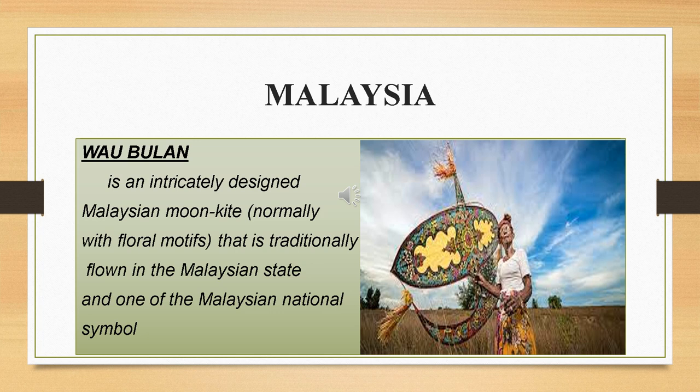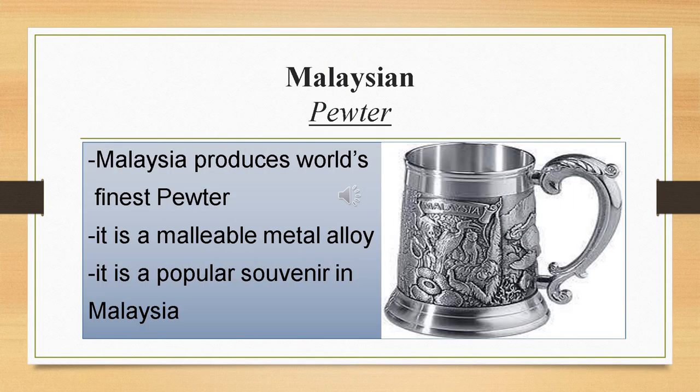The craft of Malaysia. Wau bulan is an intricately designed Malaysian moon kite, normally with floral motifs, that is traditionally flown in the Malaysian state and is one of the Malaysian national symbols. Another craft from Malaysia is pewter. Malaysia produces the world's finest pewter. It is a malleable metal alloy and is a popular souvenir in Malaysia.